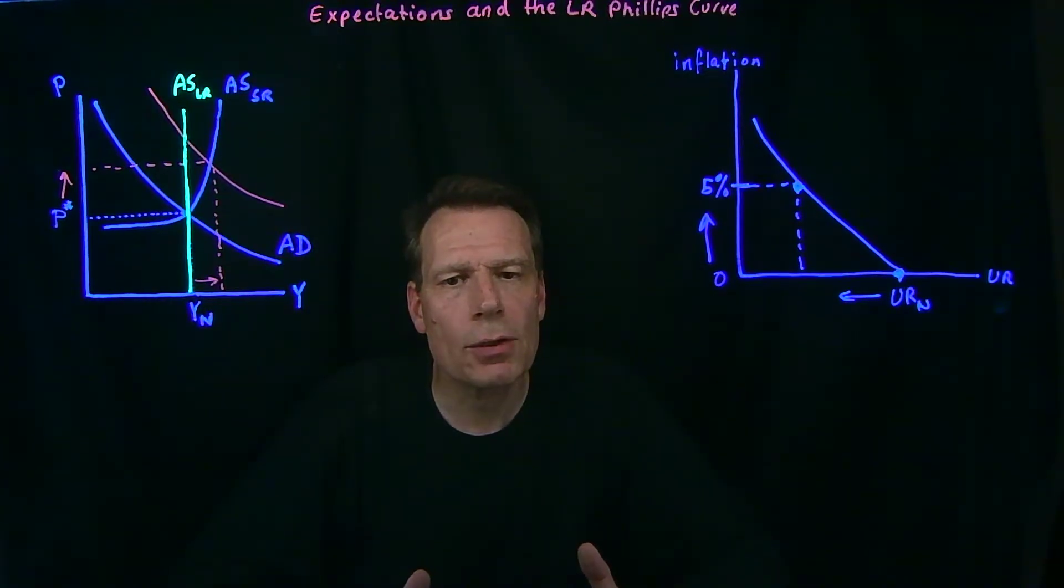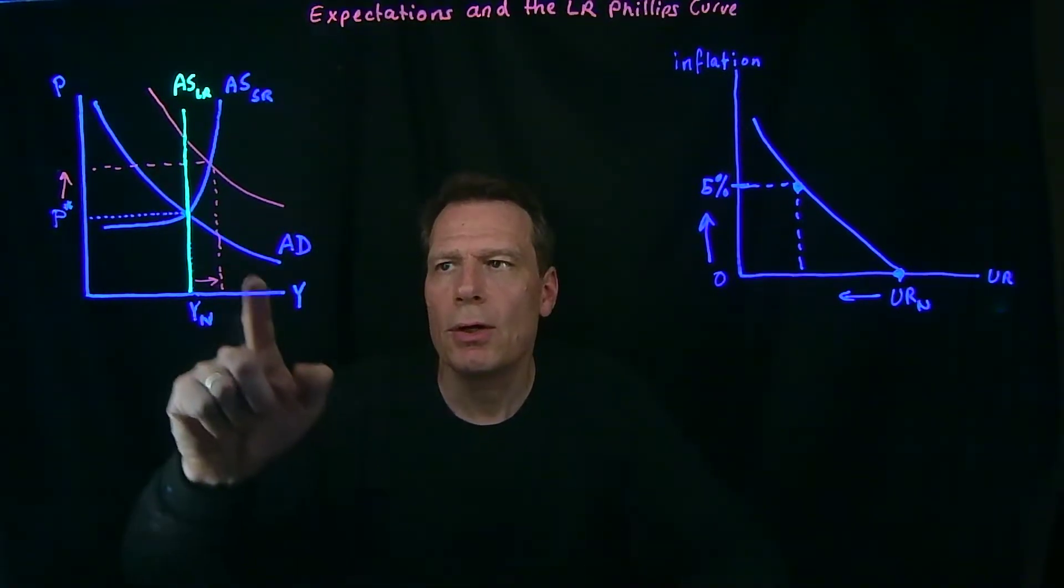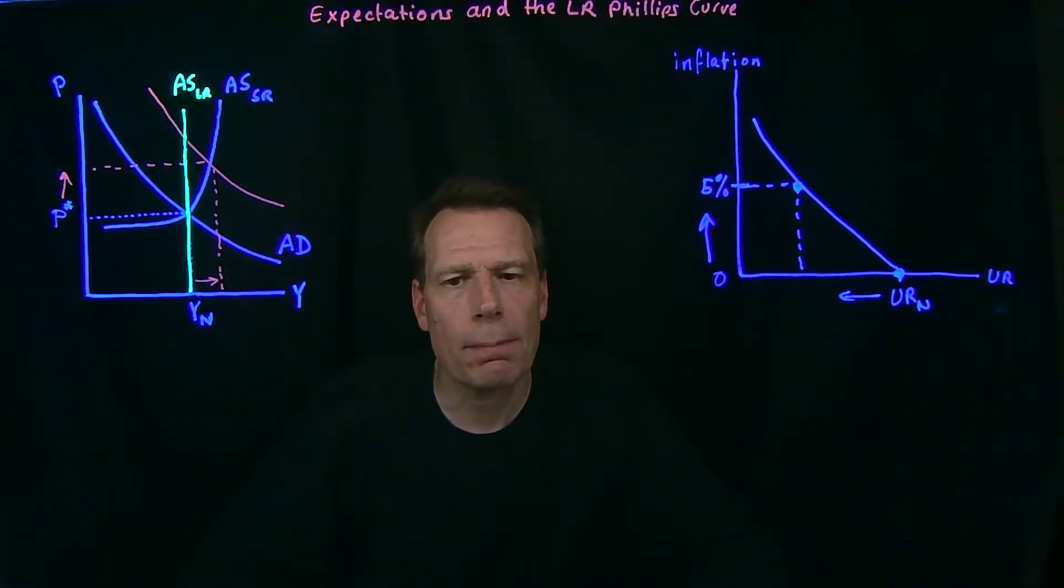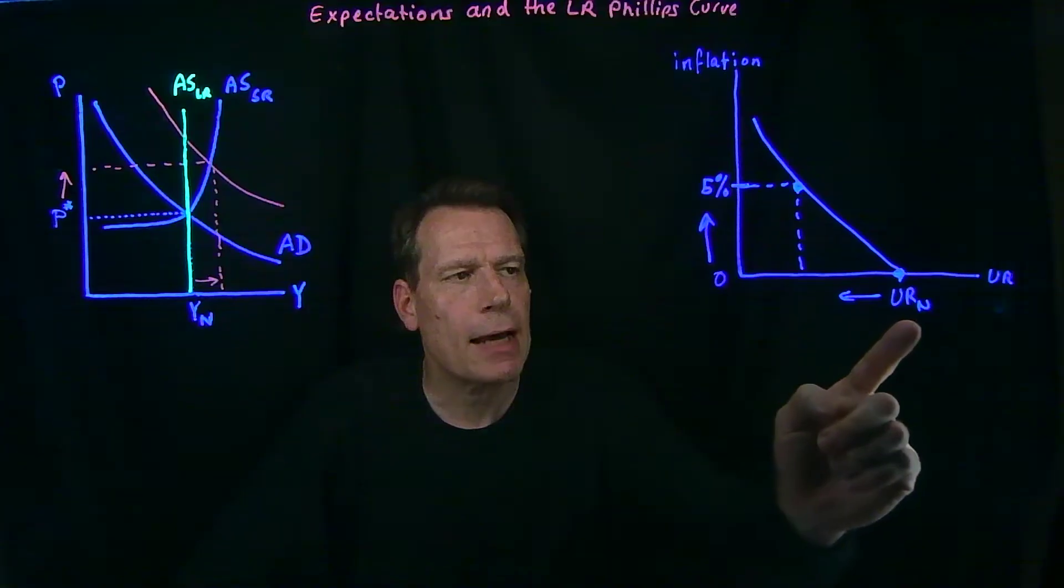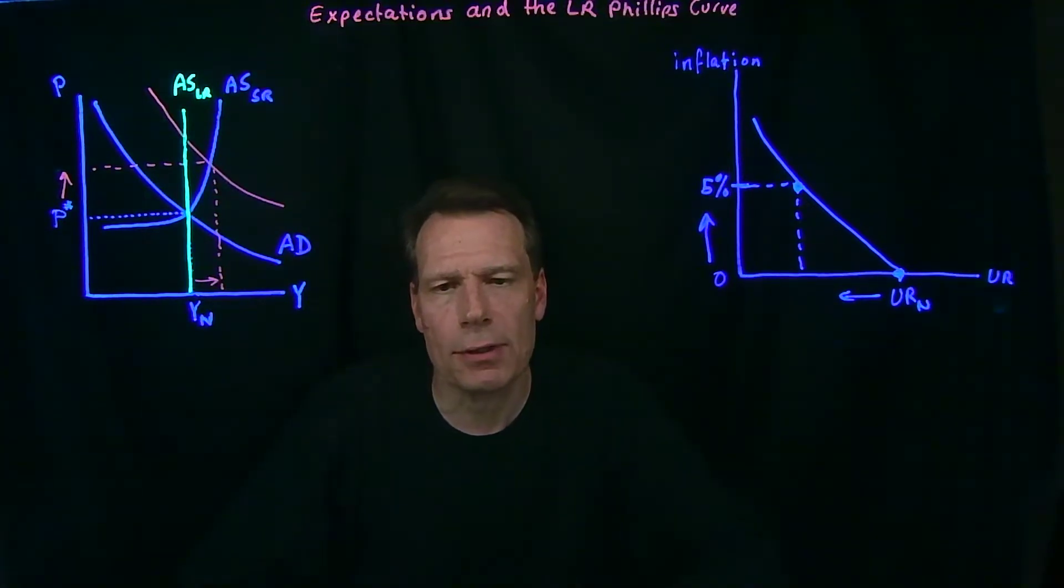We've now seen that the government can use expansionary policy to shift the aggregate demand curve up and cause GDP to rise above its natural level and unemployment to fall below its natural level.